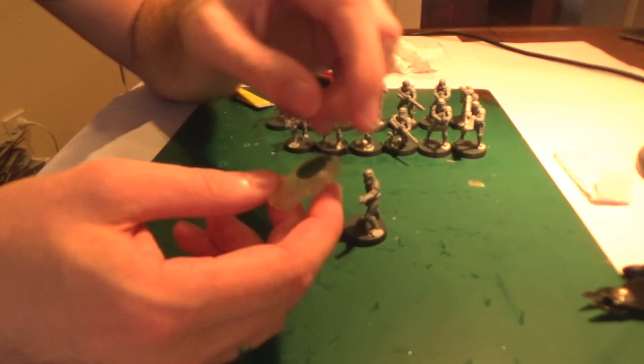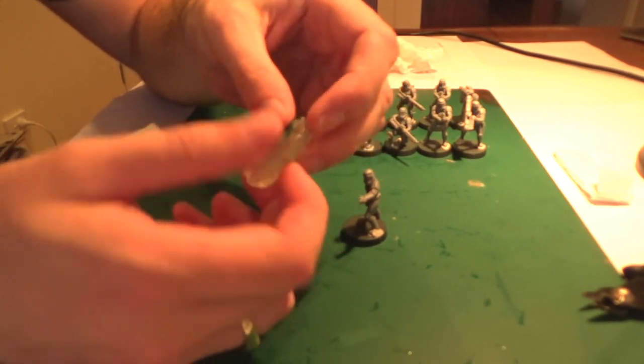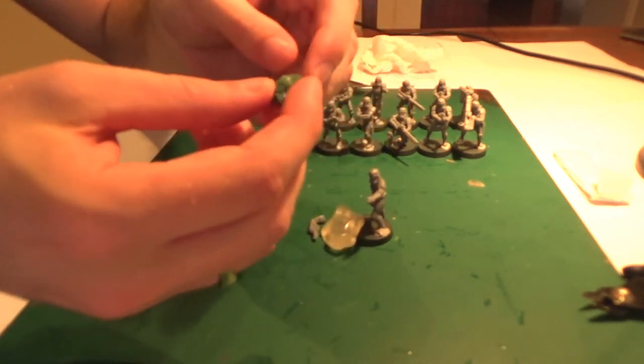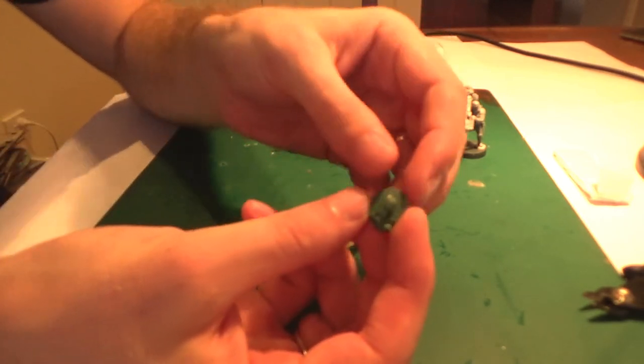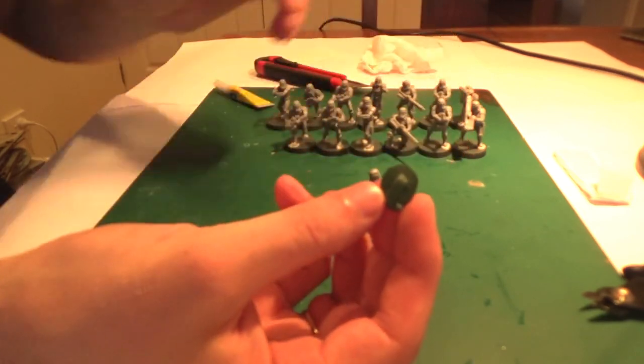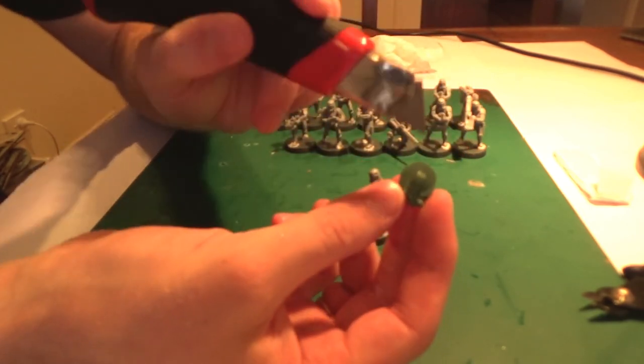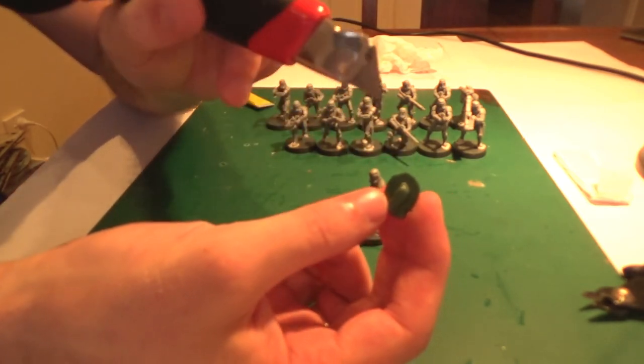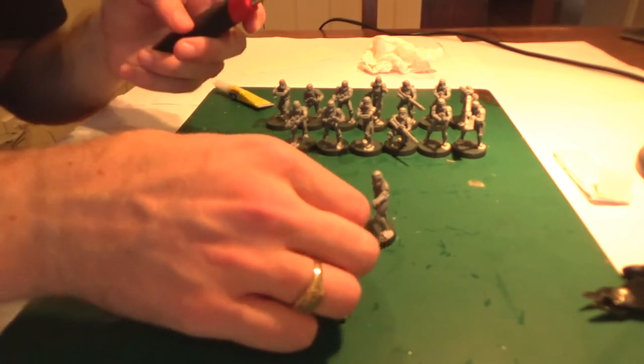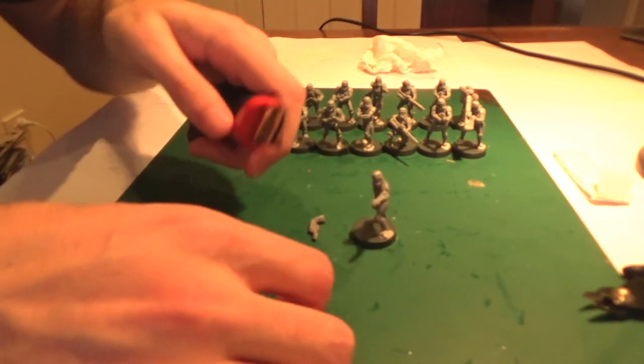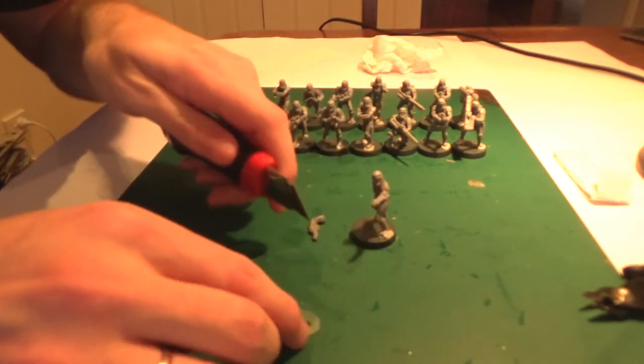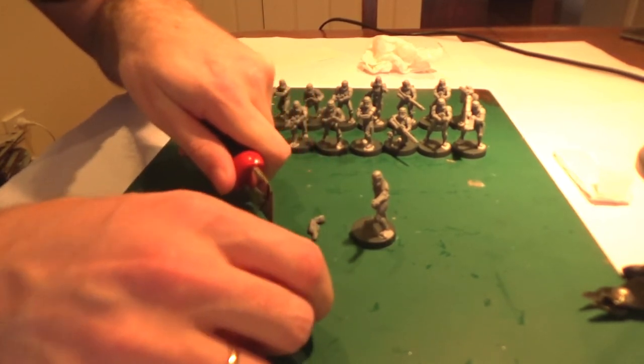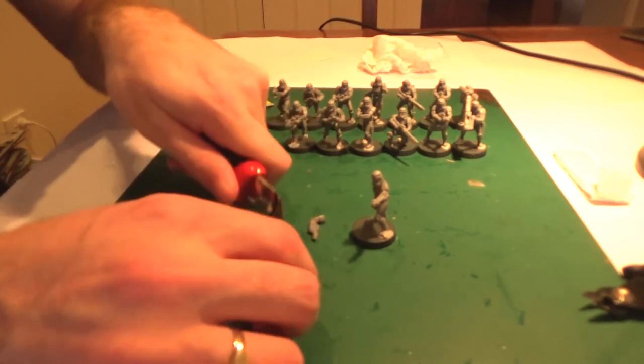Once your green stuff is sufficiently dry, you can remove it from the mold. You can either bend the mold or cut it, it doesn't really matter. Whichever you find easiest. You pop it out. And there's the imprint of the shoulder pad and the bit of the arm. It's got a small little imperfection there. So you could cast it again or just run with this. So now all you want to do is trim the shoulder pad out of the flash, all the excess green stuff.